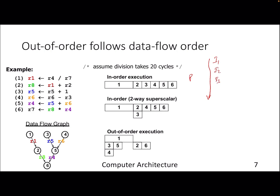Instead, out-of-order execution follows a data flow order. As long as instructions are not dependent — they are independent during the execution stage — it tries to execute them concurrently. It may happen that we finish execution of a future instruction before finishing the execution of a previous instruction. For example, consider six instructions where the first instruction is a division taking 20 cycles.